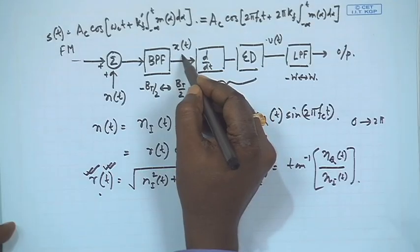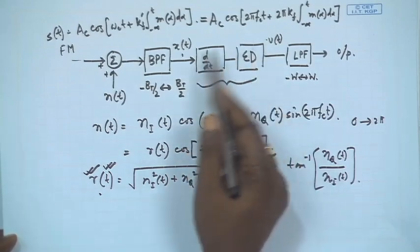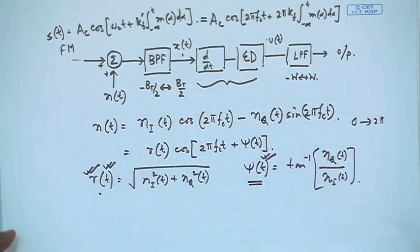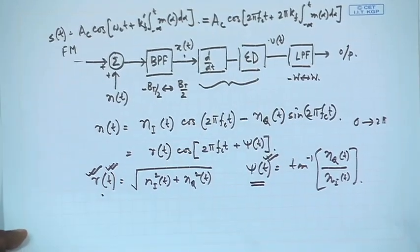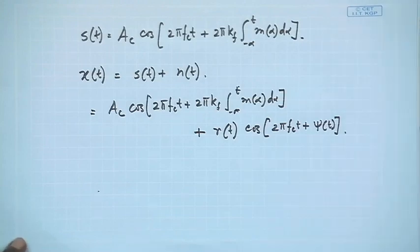Let us come back to the same equation derived in the previous class — x(t) in the FM demodulator circuit. After the bandpass filter, we have already characterized the signal plus noise, and this is the noise part.